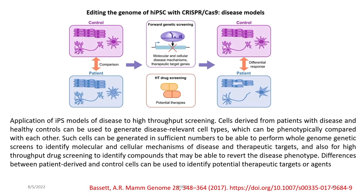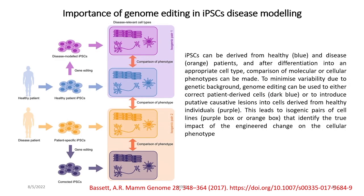Application of the induced pluripotent stem cell model of disease to high-throughput screening is possible. Cells derived from patients with disease and healthy controls can be used to generate disease-relevant cell types which can be phenotypically compared. Such cells can be generated in sufficient numbers to perform whole-genome genetic screens to identify molecular and cellular mechanisms of disease and therapeutic targets, and also for high-throughput drug screening to identify compounds that may revert the disease phenotype.